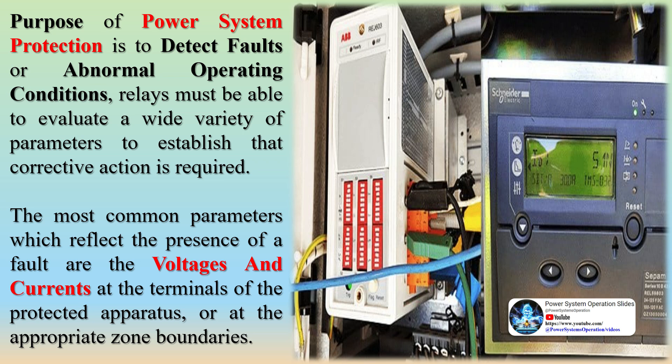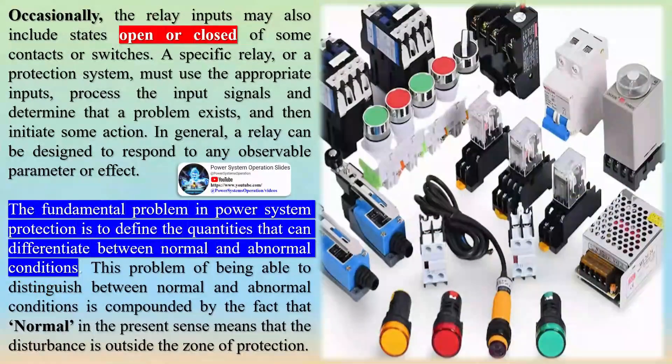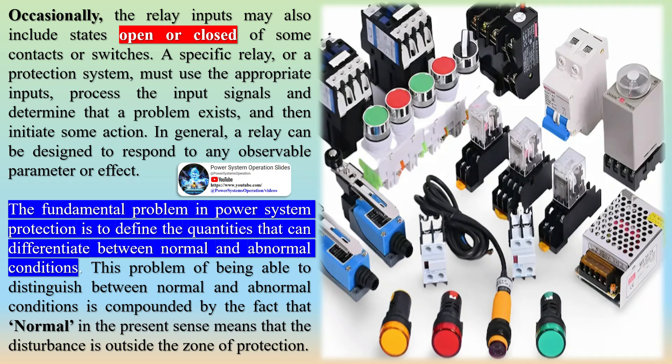By detecting these faults promptly, the protection system can isolate the affected sections, preventing the spread of damage to other parts of the network. This isolation helps in safeguarding expensive equipment like transformers and generators from severe damage, thereby extending their operational life and reducing maintenance costs.